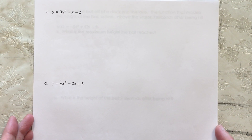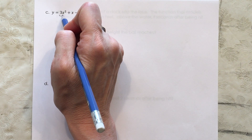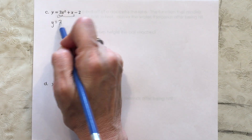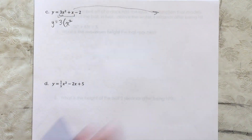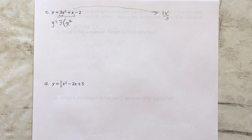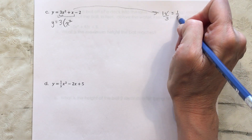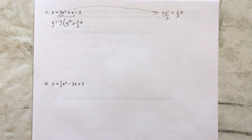Part c is one where you create a fraction. I find these more challenging than when you start with a fractional a value. Our a value is a positive 3, so it has to be factored out of the terms containing x. 3x² ÷ 3 = x². Then x ÷ 3 = (1/3)x — so we created a fraction there.